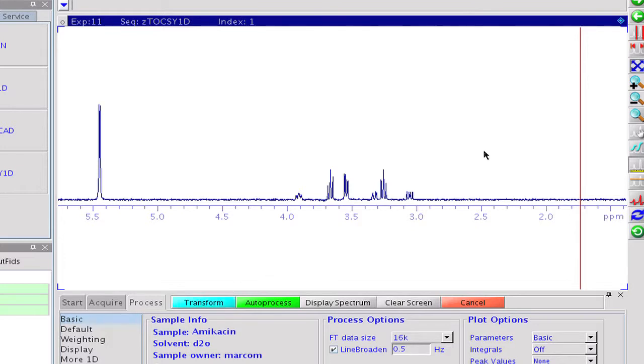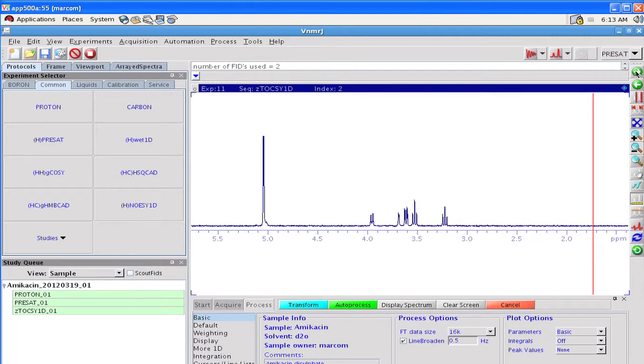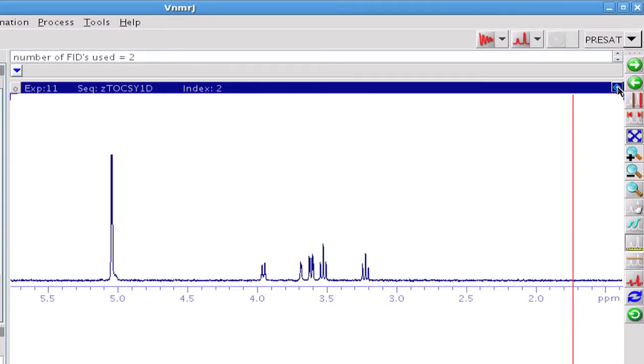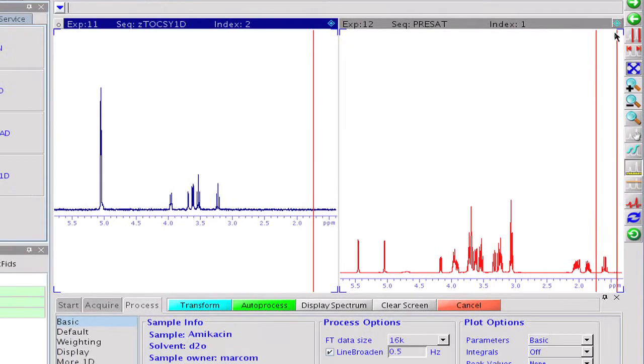A renewed Fourier transform makes the second sugar subspectrum accessible. In the remaining acquisition time, we can prepare for an overlaid display between the original proton spectrum and the set of 1D Toxy spectra.